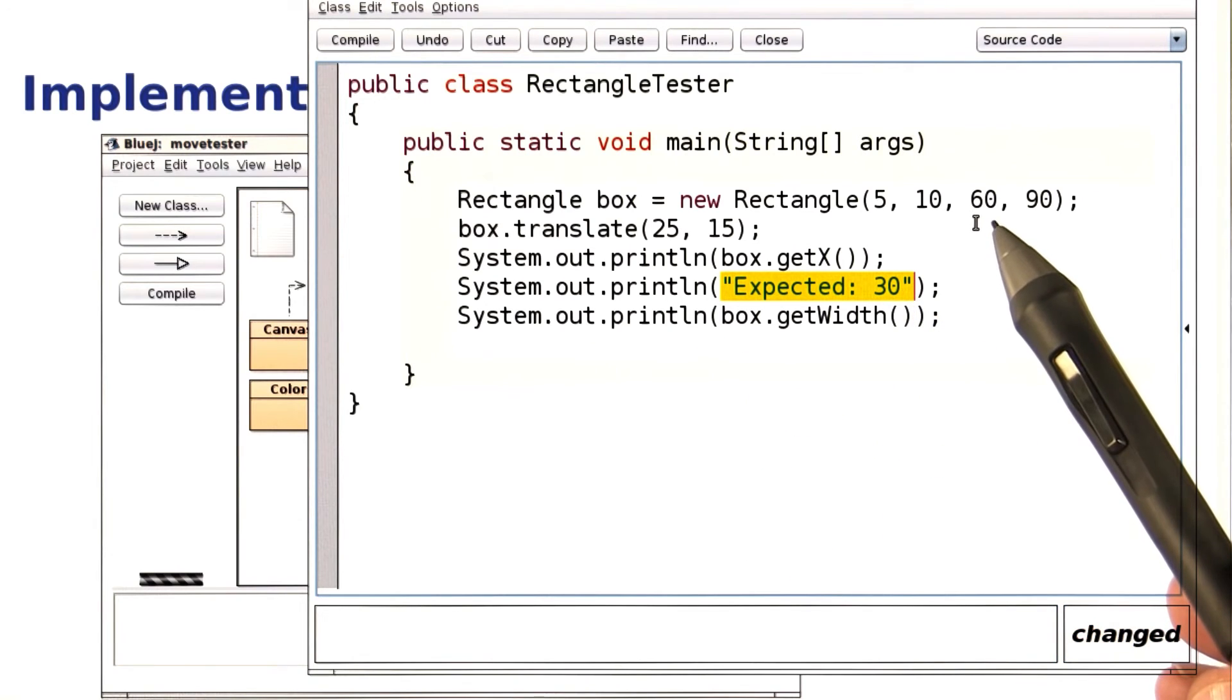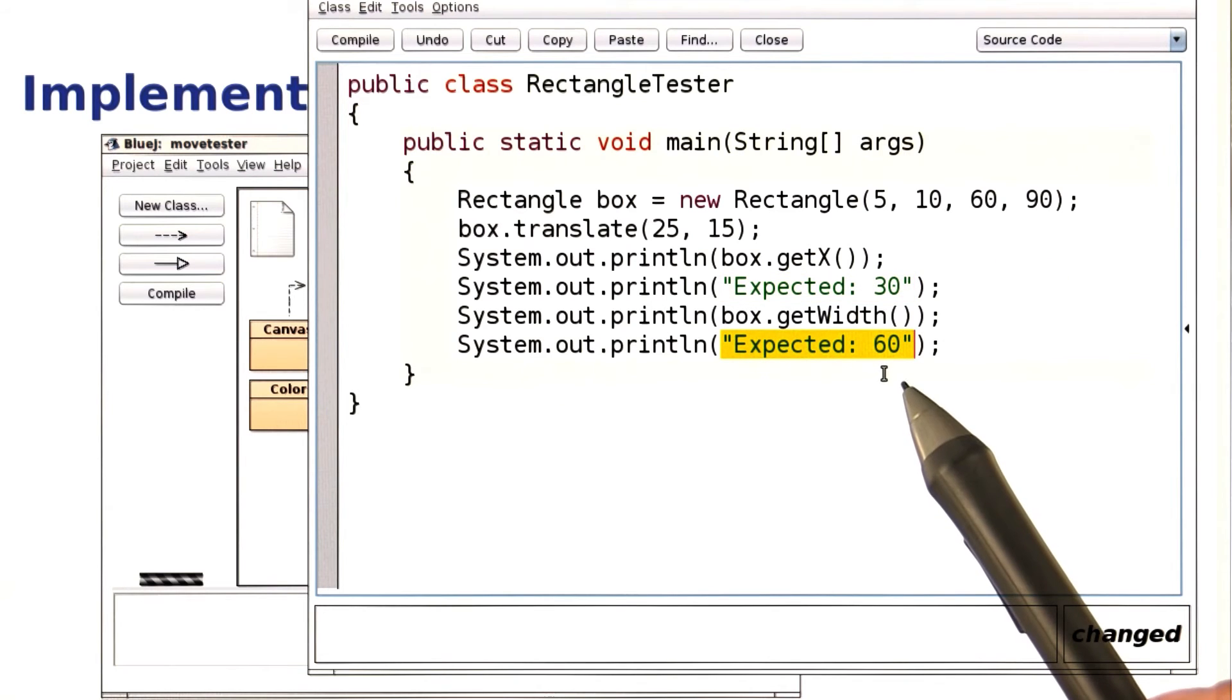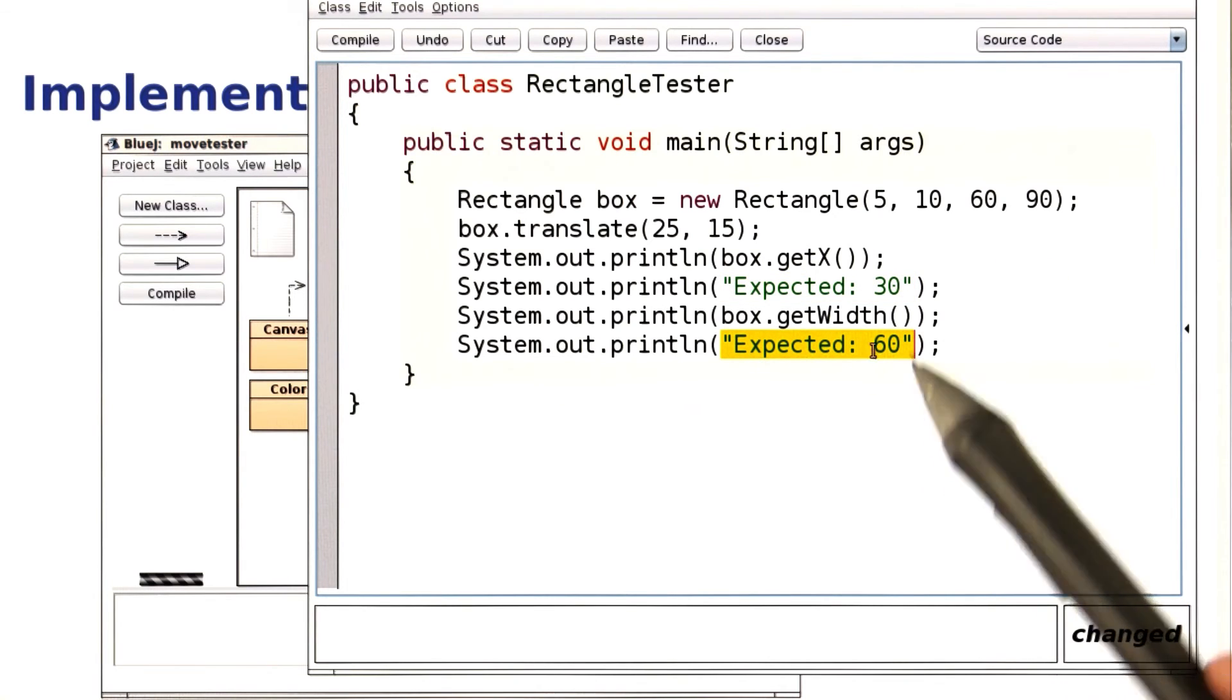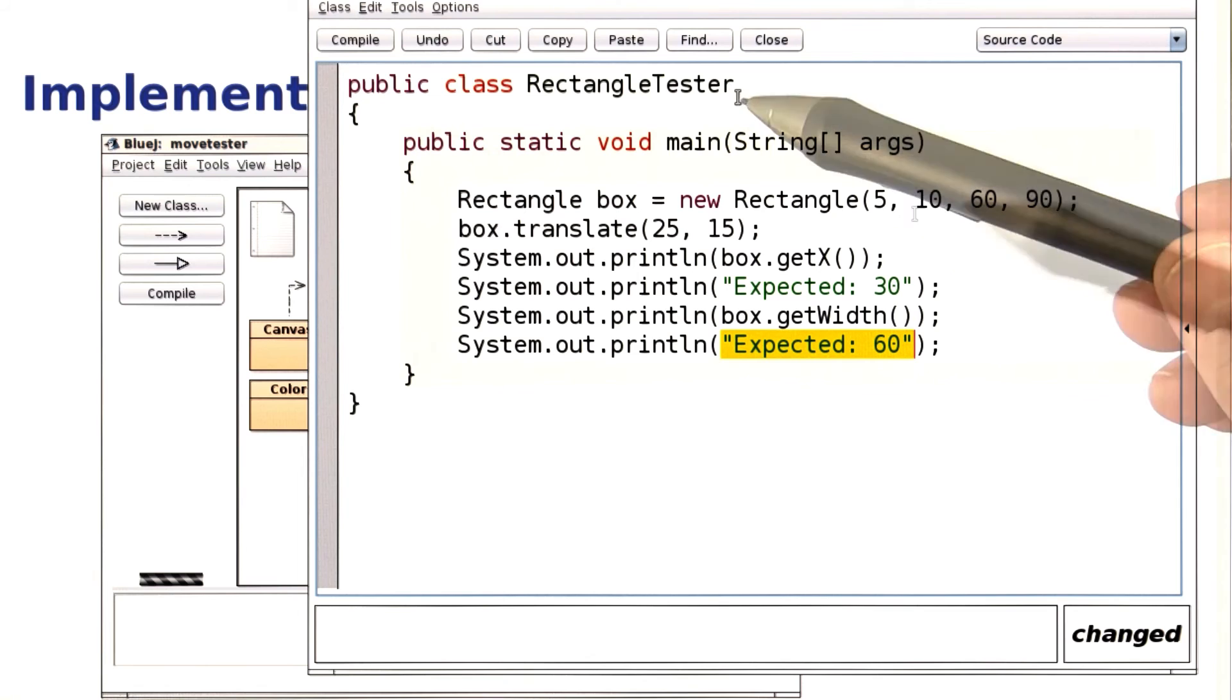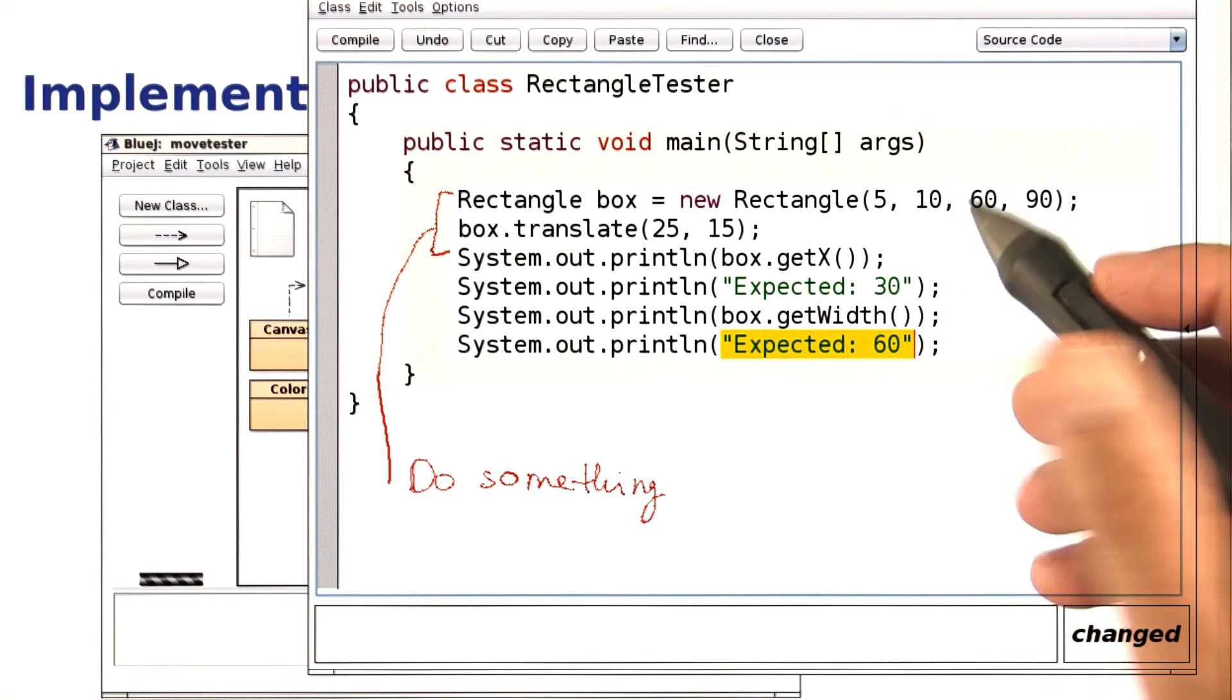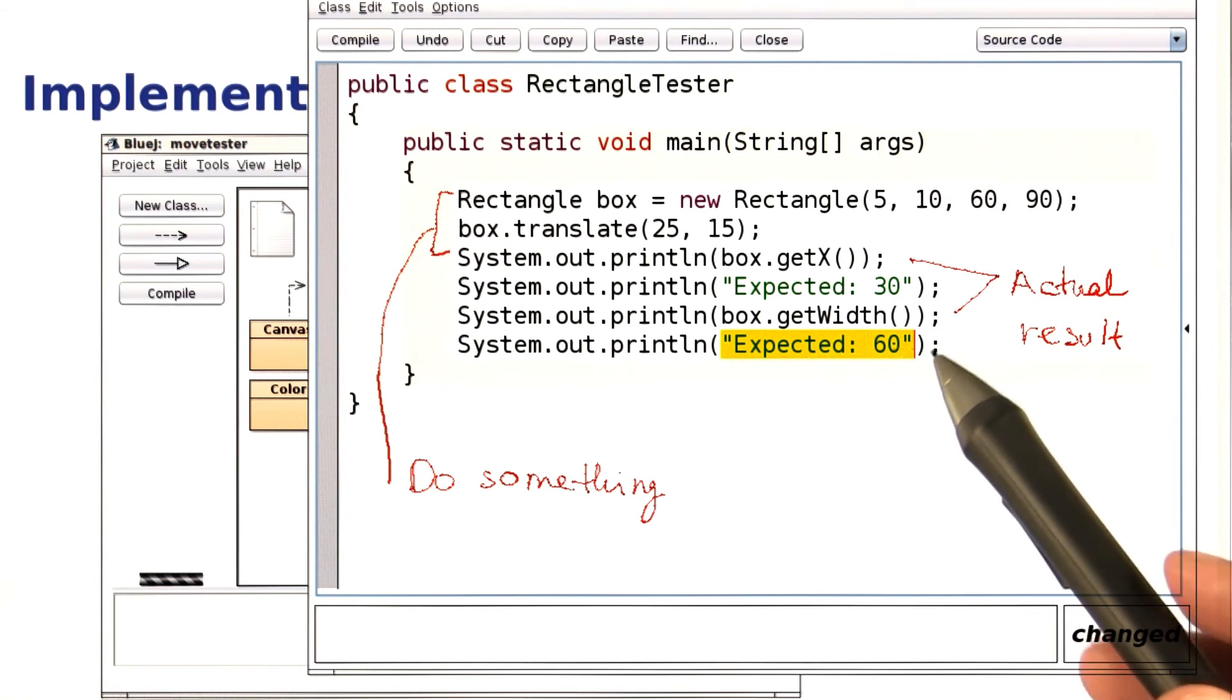What about the width? The width is 60, and moving the rectangle shouldn't change it, so we expect it to be 60 again. So this is a good example of a tester program. We do something, we print the results, and we print the expected result.